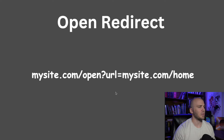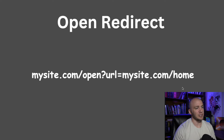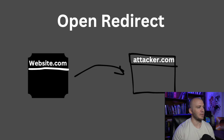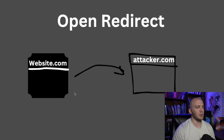Before we get too far into this, it'd be helpful to understand what an Open Redirect is. If we're on mysite.com and we have a URL passing in a parameter, it's going to take us to mysite.com/home. An Open Redirect is where you put in another website, and it takes you there when you send the GET request. If the server-side code does not validate where it's sending us, we can put whatever we want and send it to an attack site. So if we have website.com with an Open Redirect, we can tell it to take us to attacker.com, and if our logs are set up properly, we can pull down the header request and get information from website.com.